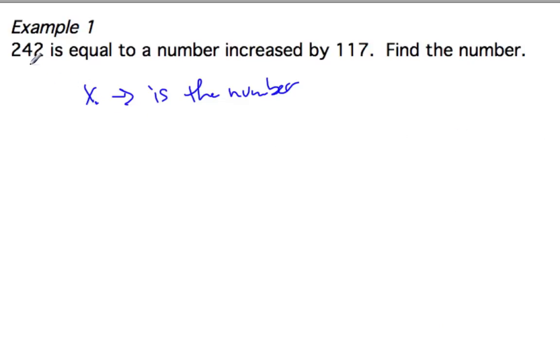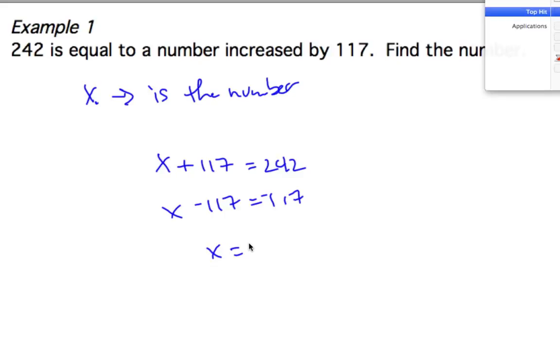And so 242 is equal to a number increased by 117. So x, if I increase x by 117, it has to be equal to 242. And so I can set up this equation by the words. Subtract my 117. Oh, Mr. Cole, I'm going to put you on the spot there. What is 242 minus 117? 125. Well done. So that is my number.